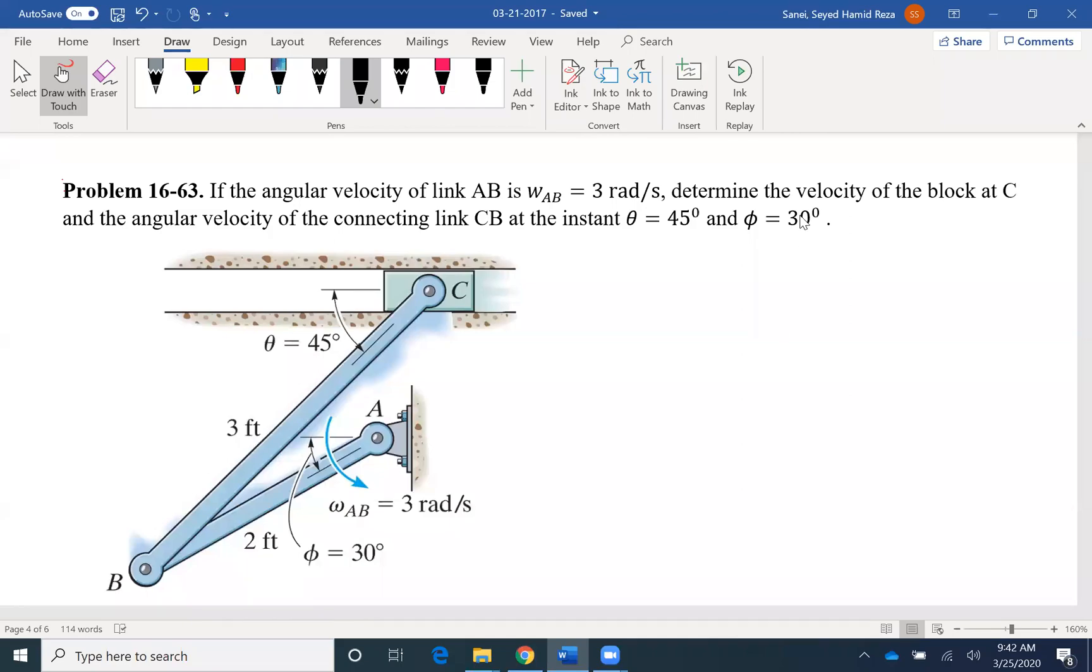Hello everyone. We are going to solve problem 63 of chapter 16 of your textbook. If the angular velocity of link AB is omega AB equals 3 radians per second, determine the velocity of the block at C and the angular velocity of the connecting link CB at the instant shown. Theta is 45 degrees and phi is 30 degrees.